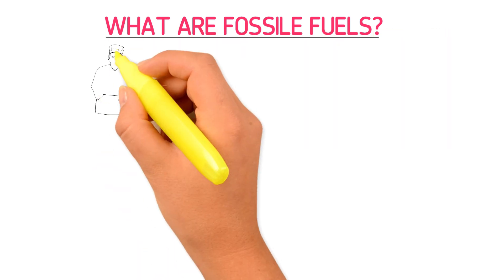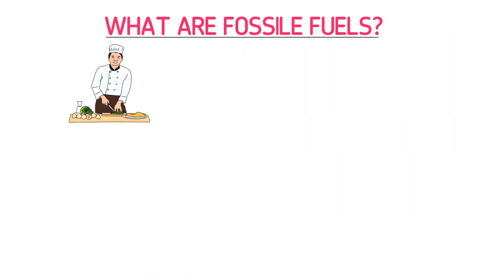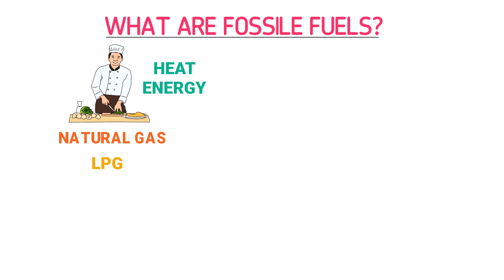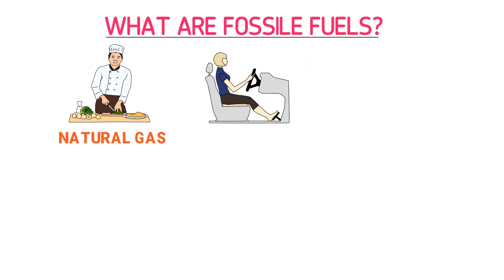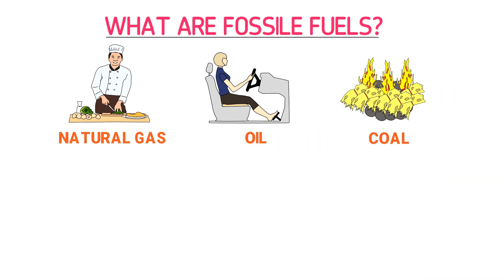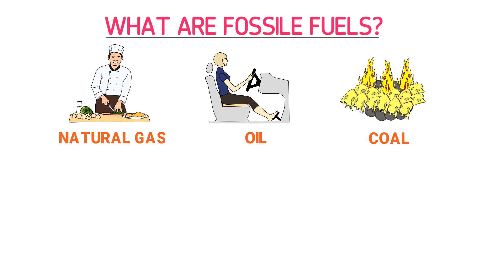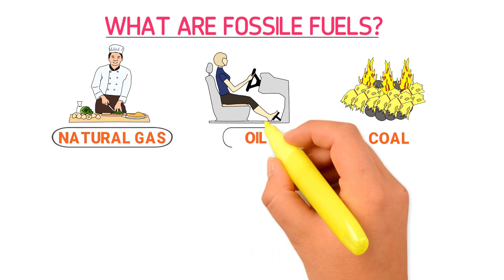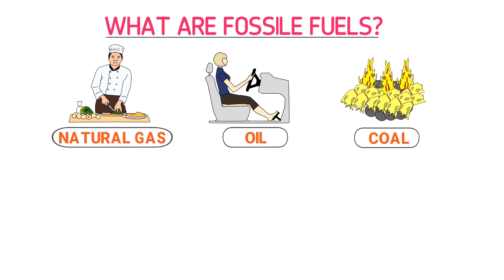Now, what are fossil fuels? Well, when you cook food, you need heat energy. You burn either natural gas or LPG in order to get heat energy. Similarly, when you drive your car, you need petroleum or oil. Also, you burn wood or coal in winter season in order to keep yourself warm. Thus, we can say that we get energy from natural gas, oil, and coal.